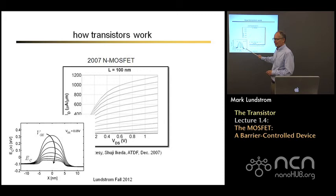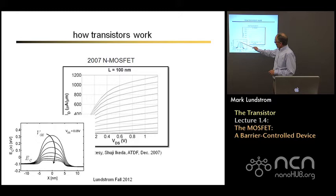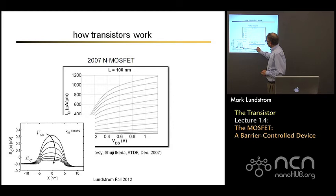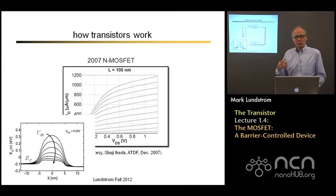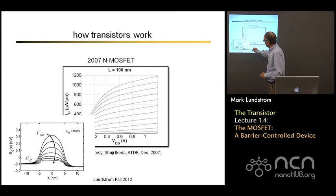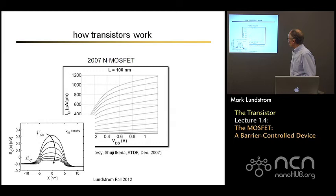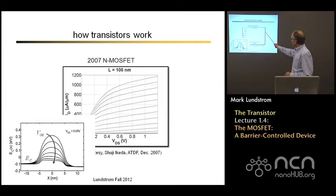Let me sketch the energy band diagram for the linear regime. Here's the conduction band in the source, and in the drain it's just a little lower because we've applied a very small voltage. The conduction band in the p-type channel is far above the Fermi level. Applying a positive gate voltage pushes the conduction band in the channel down, lowers the barrier, lets electrons flow in, and makes an n-type channel. Under high gate voltage, the slope of the energy band diagram in the channel is linear — a constant slope means a constant electric field under small drain-to-source bias.